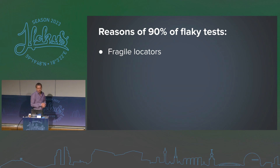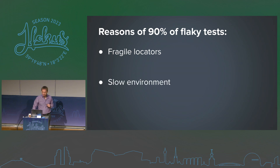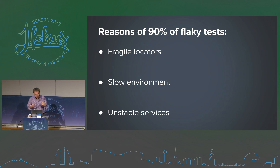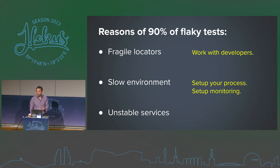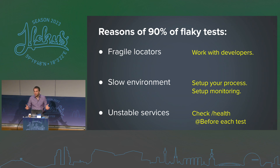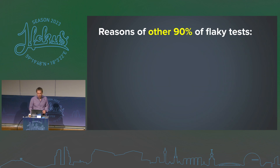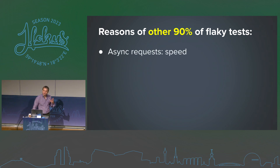If we try to analyze the first results: 90% of flaky tests are caused by fragile locators, changing locators, slow or unstable environments, or unstable microservices. For me it's boring to talk about these reasons because they're easy to fix — just manage how developers change locators, set up your deployment process, set up monitoring, check that all services are deployed before running every test.